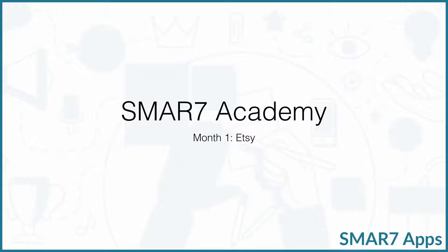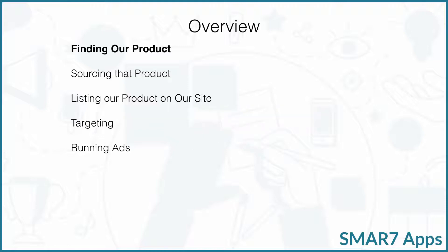What's up, everybody? It's Matt Schmidt here. I want to welcome you to Smart Academy Month 1. We're going to be talking about sourcing some products from Etsy, listing it on our store, and running some ads. This is a quick overview of what you're going to be seeing in the next five video series.